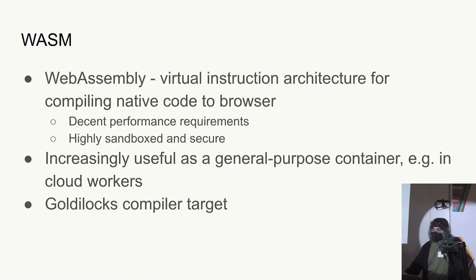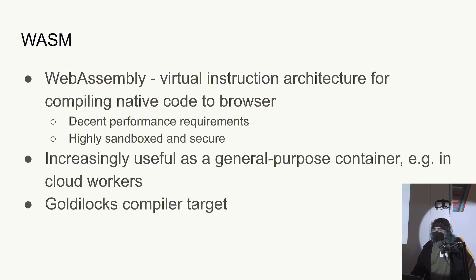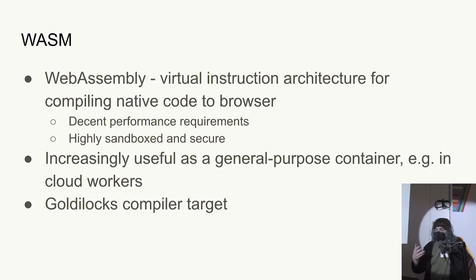WebAssembly — WASM — is what FELT outputs. You may notice there was no web browser at all involved in that demo. WebAssembly was created for the browser; it's a virtual instruction architecture. The idea is you can compile something like C to it and include native code in the browser that is sandboxed but also decently performant. Increasingly cloud companies are pushing it. I think it's a Goldilocks compiler target — if you ever find yourself writing a compiler, I really recommend trying to learn WASM, because it's high level enough that you can do it without learning things like register allocation and managing your stack, but it's low level enough that you're running within an order of magnitude of native performance.